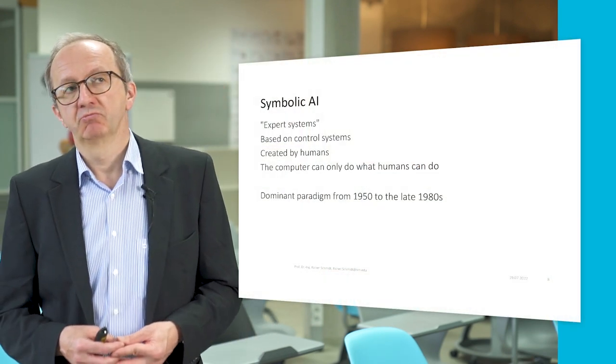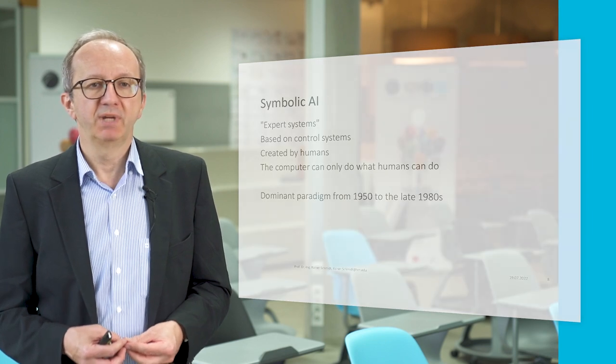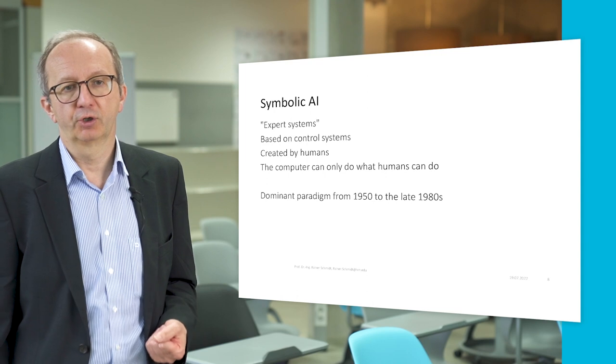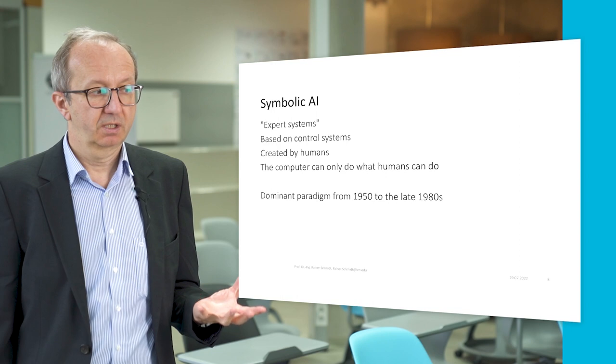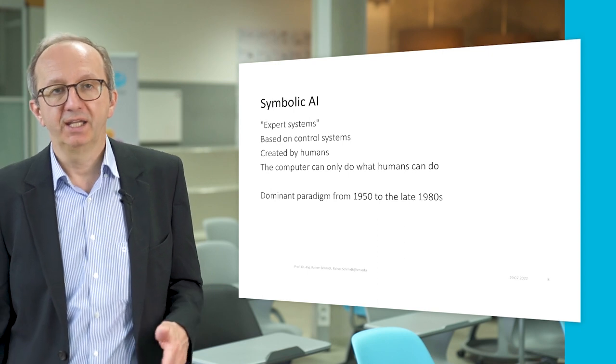Let's have a look at some flavors of AI. For a long time, the most popular type was symbolic AI, which manifested in expert systems. The idea was to extract knowledge from experts in a formalized way — as formulas or programming-like structures — based on classical control systems. However, this came with very high effort, as everything had to be created by humans, so the computers could only do what humans were able to express.